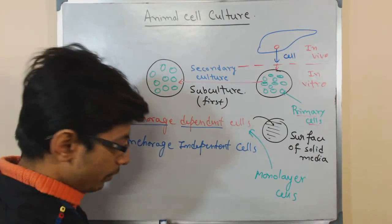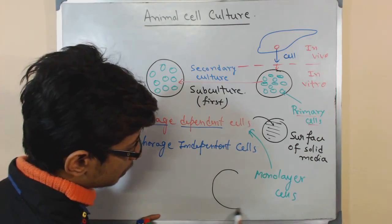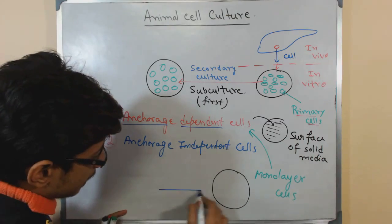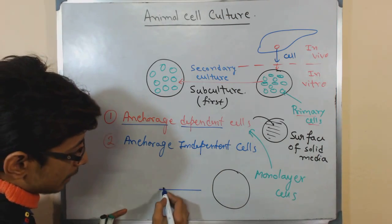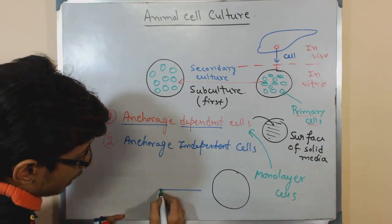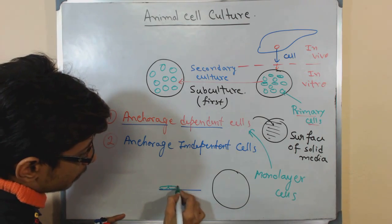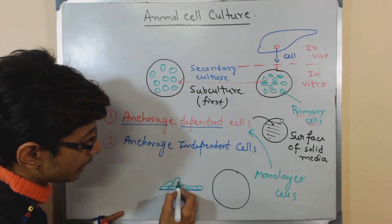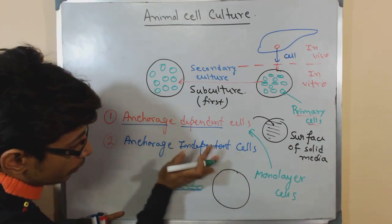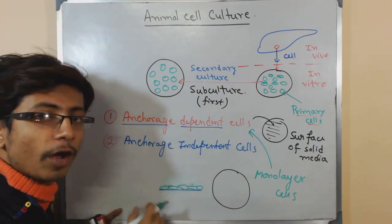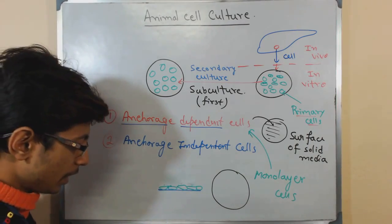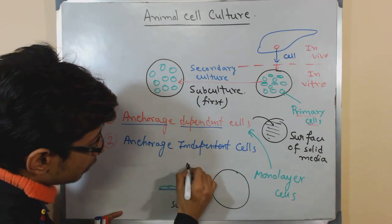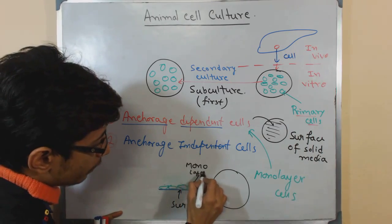Why are they termed monolayer? Because if we have a solid surface media — looking at it horizontally — the cells start to grow. They will grow until they form one layer of cells. They will not grow beyond that — never. They will only form one single layer of cells on the surface of the media. This is the surface and this is the mono, meaning single layer of cells.